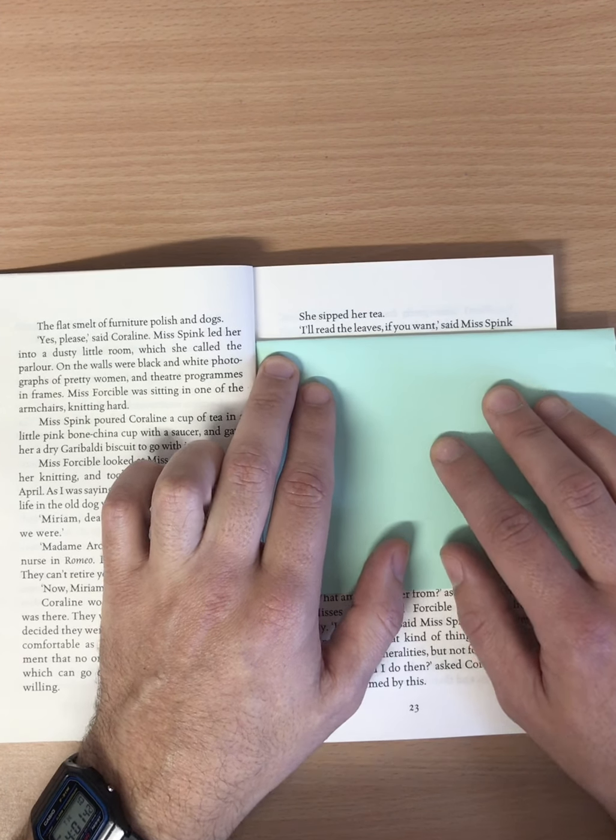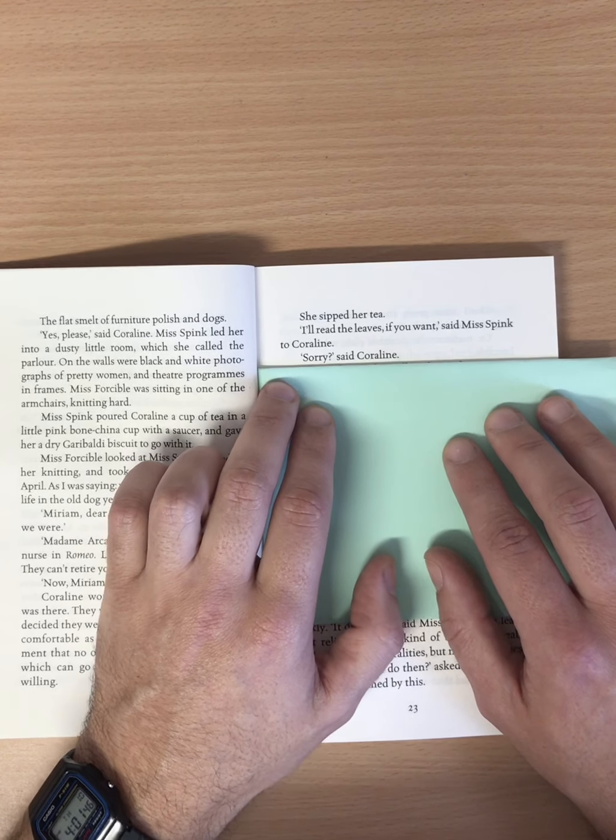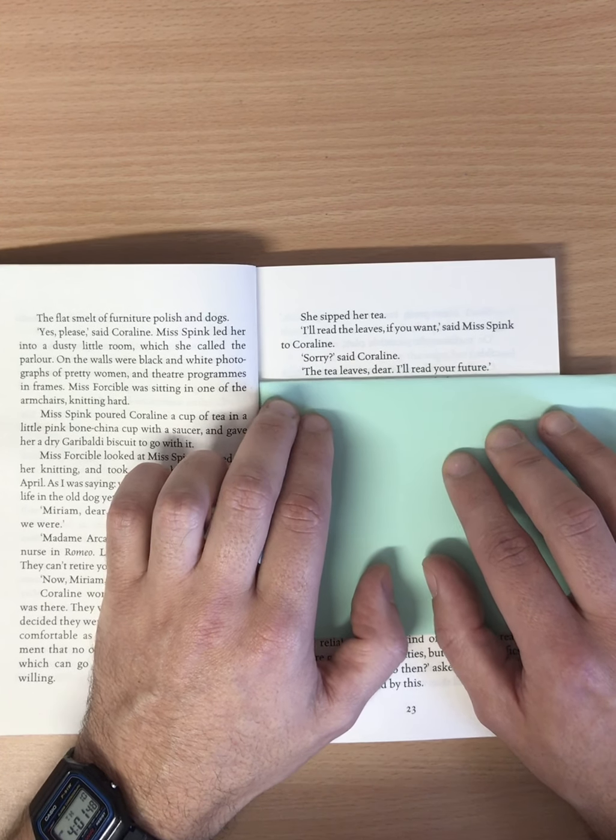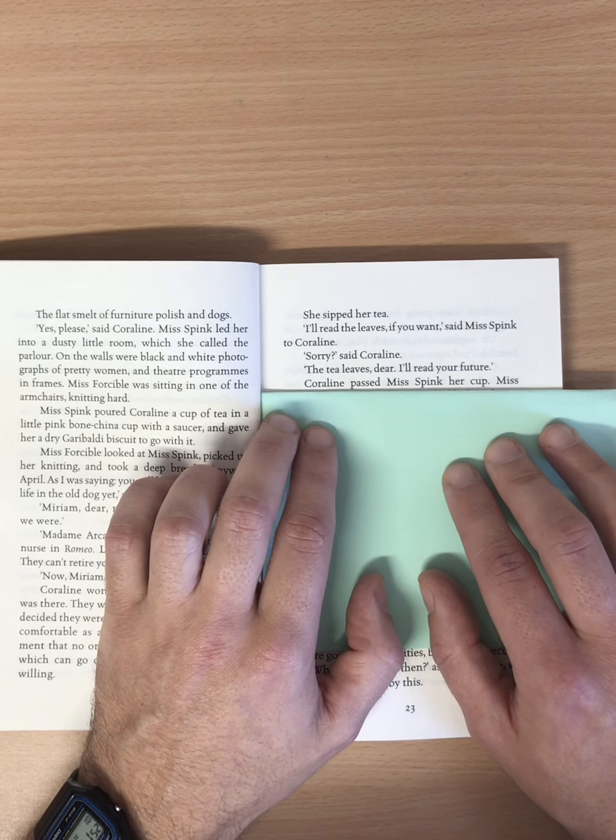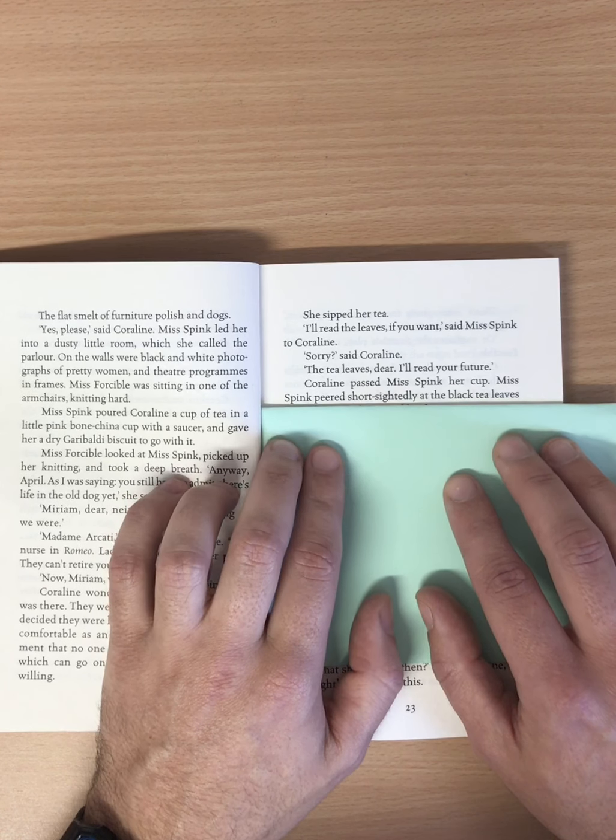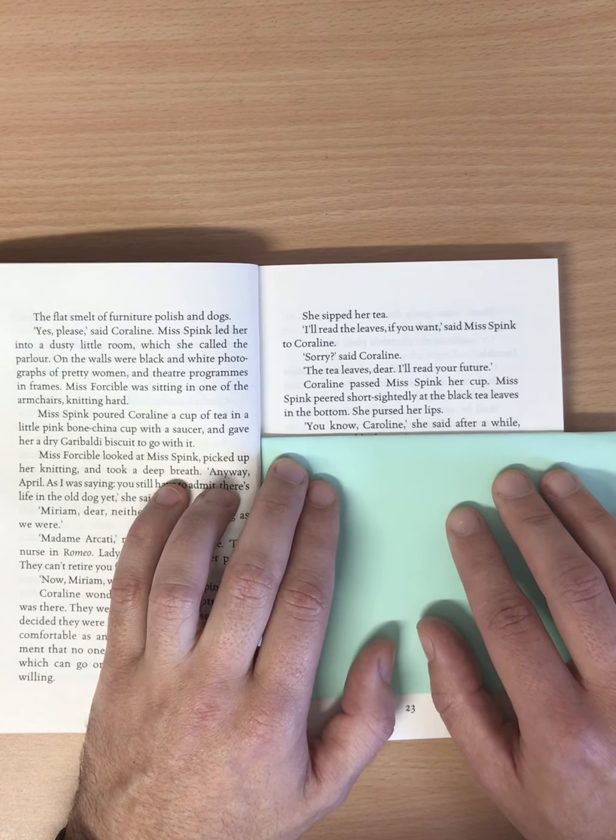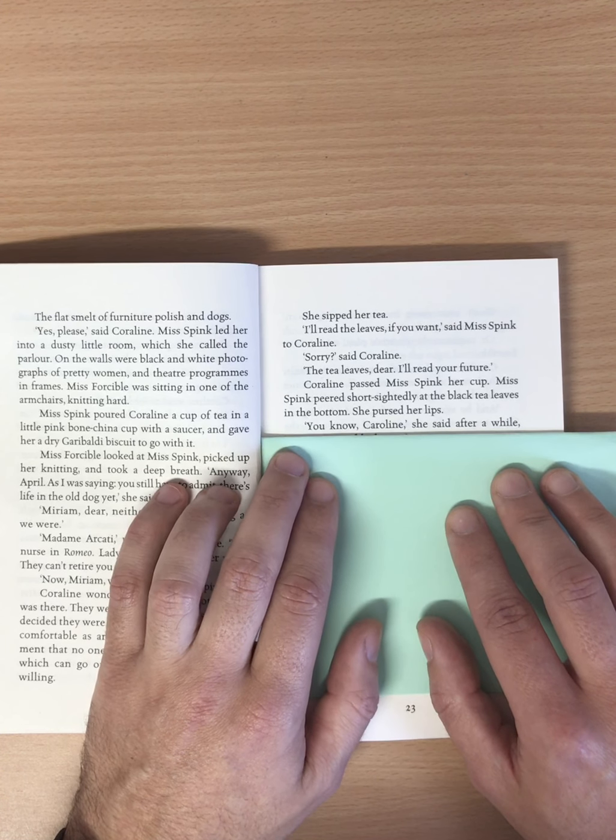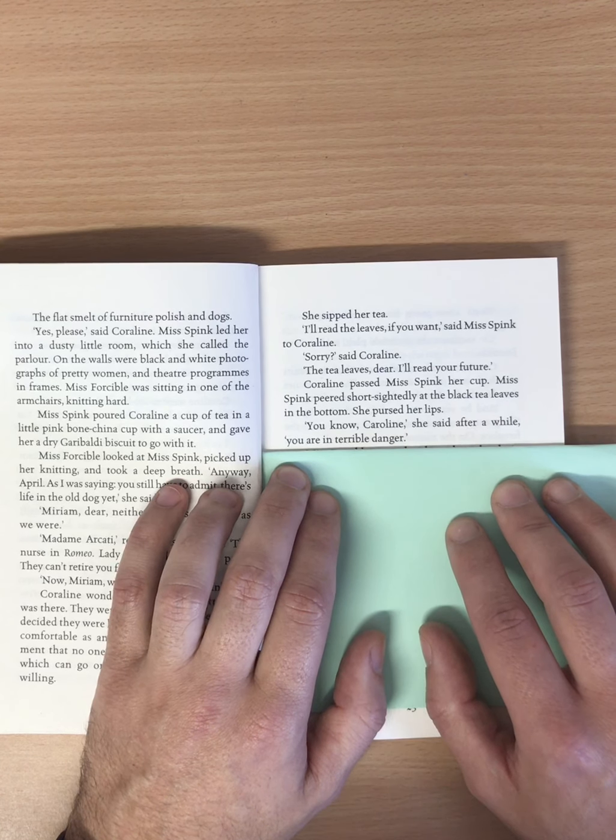Miriam, dear, neither of us is as young as we were. Madam McCarthy, replied Miss Forcible, the nurse in Romeo, Lady Bracknell, character parts, they can't retire you from the stage. Now, Miriam, we agreed, said Miss Spink. Coraline wondered if they'd forgotten she was there. They weren't making much sense. She decided they were having an argument as old and comfortable as an armchair. The kind of argument that no one ever really wins or loses, but which can go on forever if both parties are willing. She sipped her tea. I'll read the leaves if you want, said Miss Spink to Coraline. Sorry? said Coraline. The tea leaves, dear. I'll read your future.